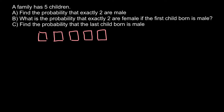Each box represents one probable event. The first child can be born as a boy or a girl — two combinations. The second child also has two combinations, and this is true for all following events. We use the product rule: 2 × 2 × 2 × 2 × 2 = 32 unique combinations of sexes in a family with five children.